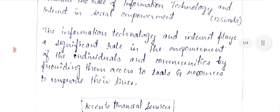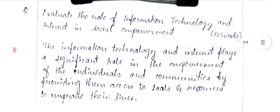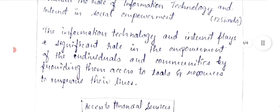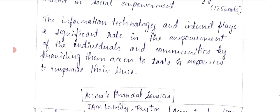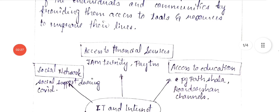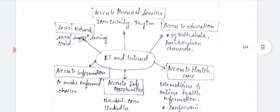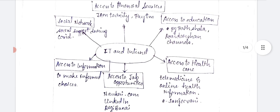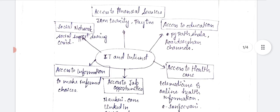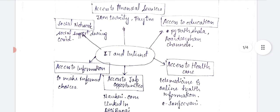In this answer, we have to link the benefits of information technology to social empowerment and development. The question is asking about society, so we need to highlight the various schemes and technologies which are working for the benefit of society. I have given a block diagram or flowchart here — drawing a flowchart will help you gain more marks because the examiner can easily identify key points, and it is a unique approach.